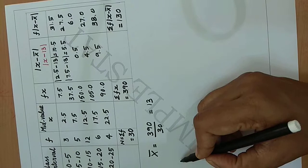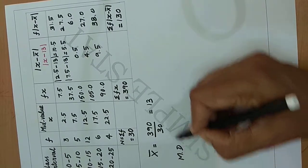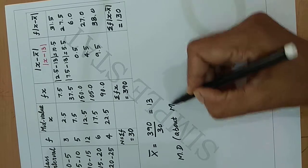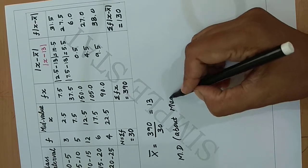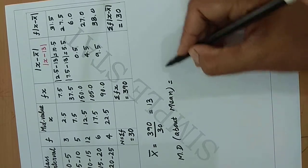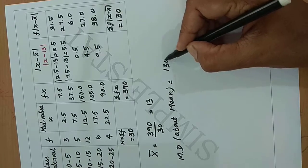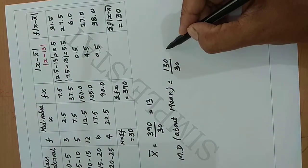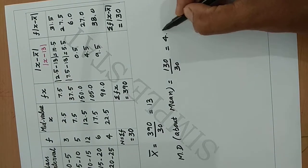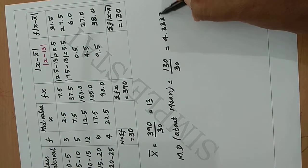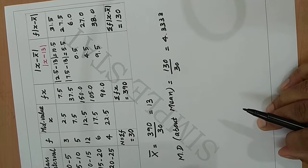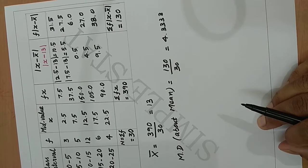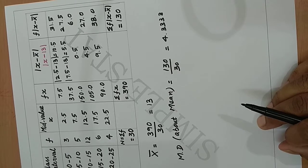Therefore, mean deviation about mean = 130 / 30 = 4.3333. The next step is to find the relative measure, that is, the coefficient of mean deviation about mean.